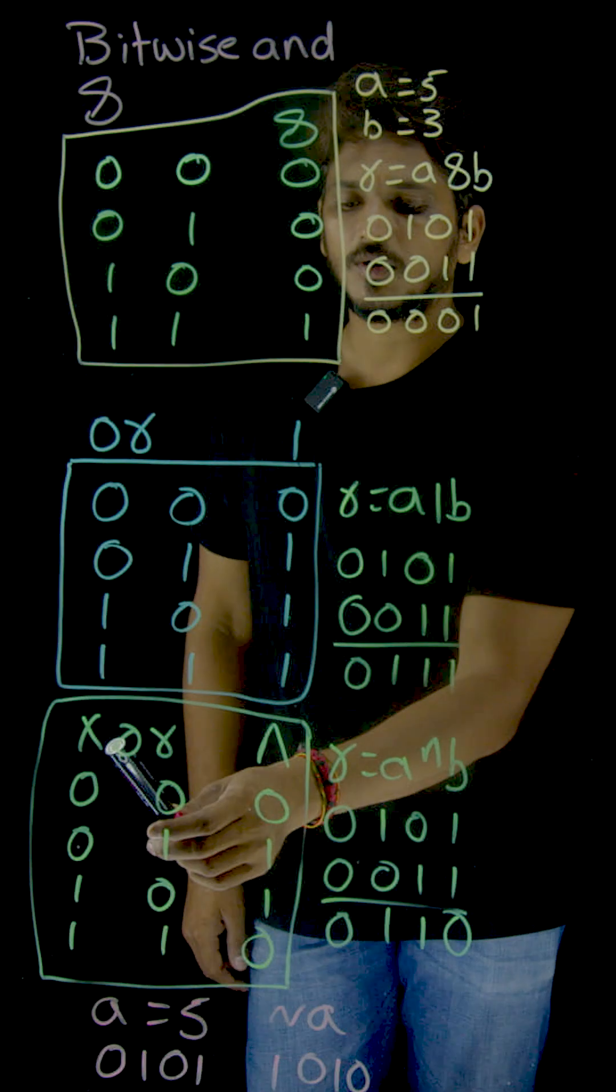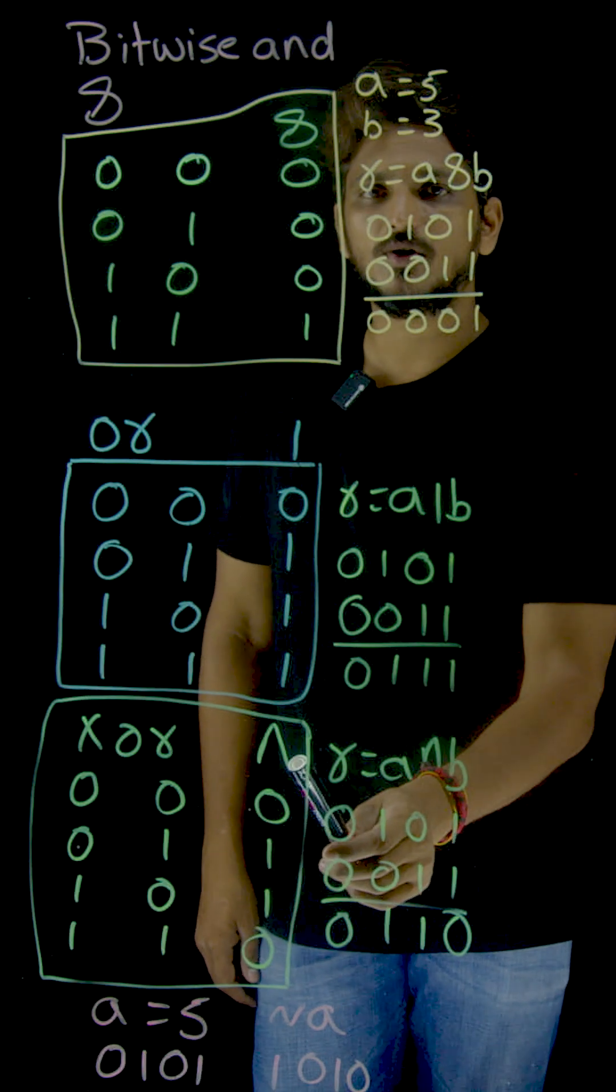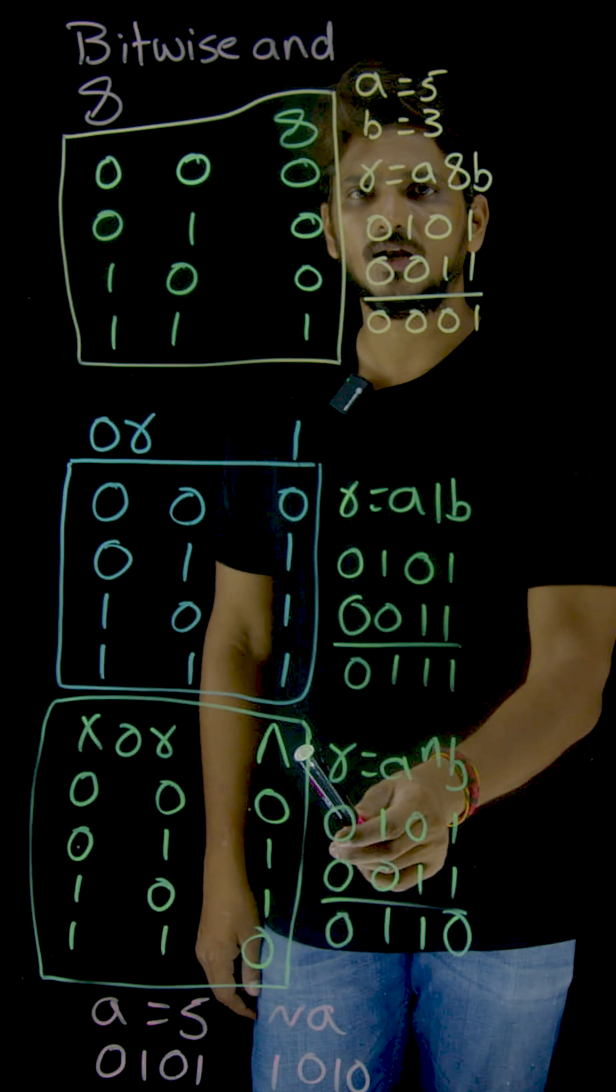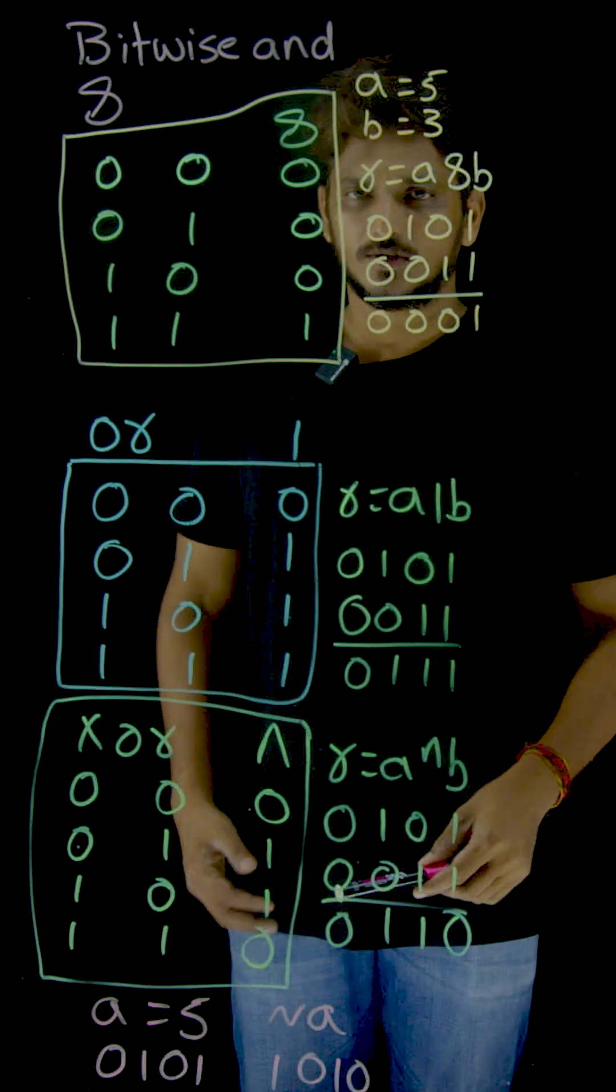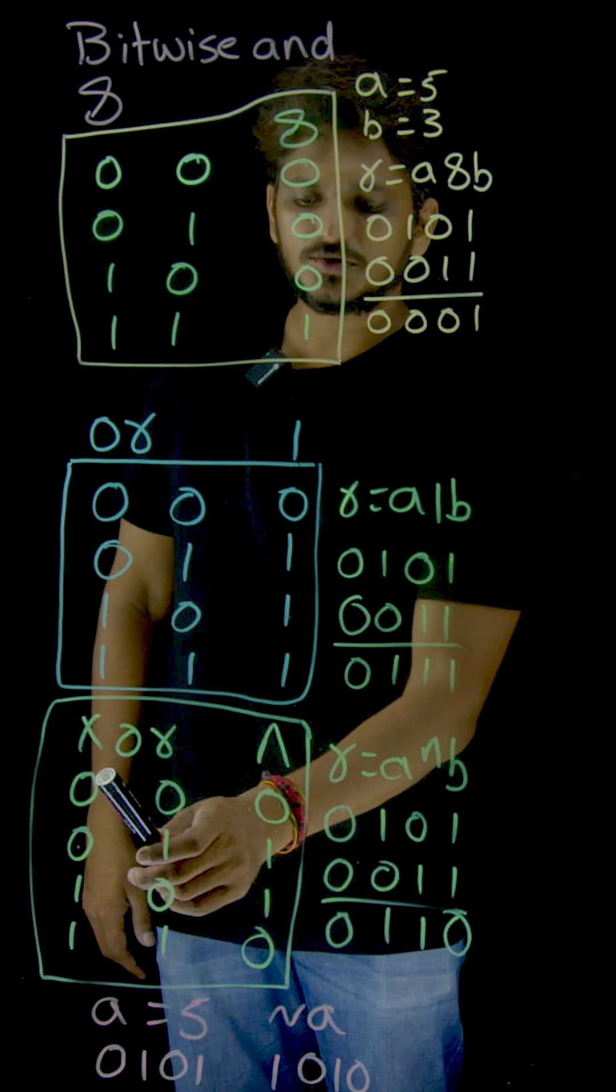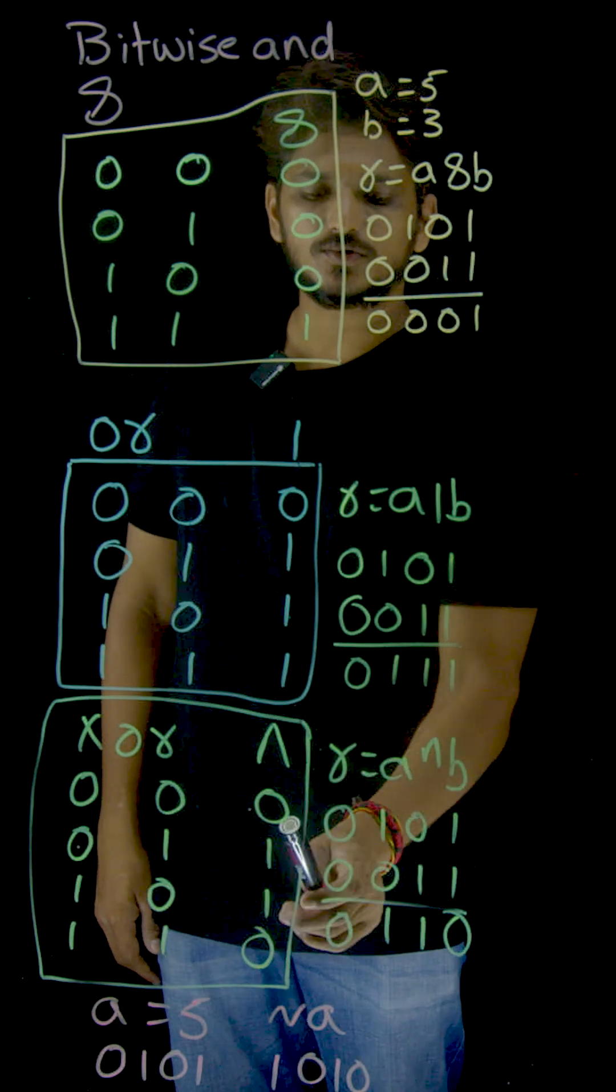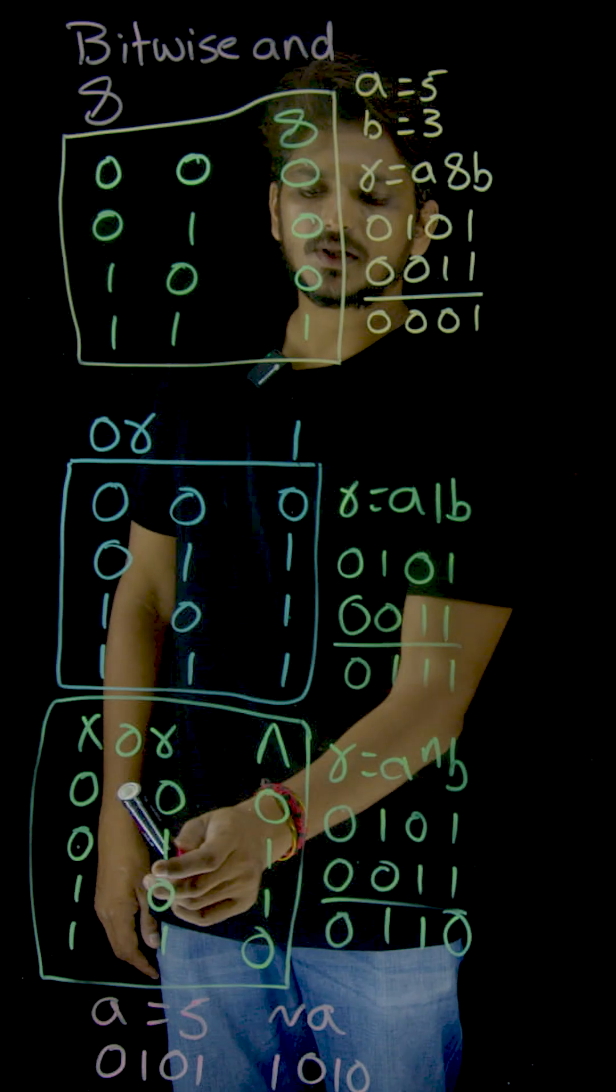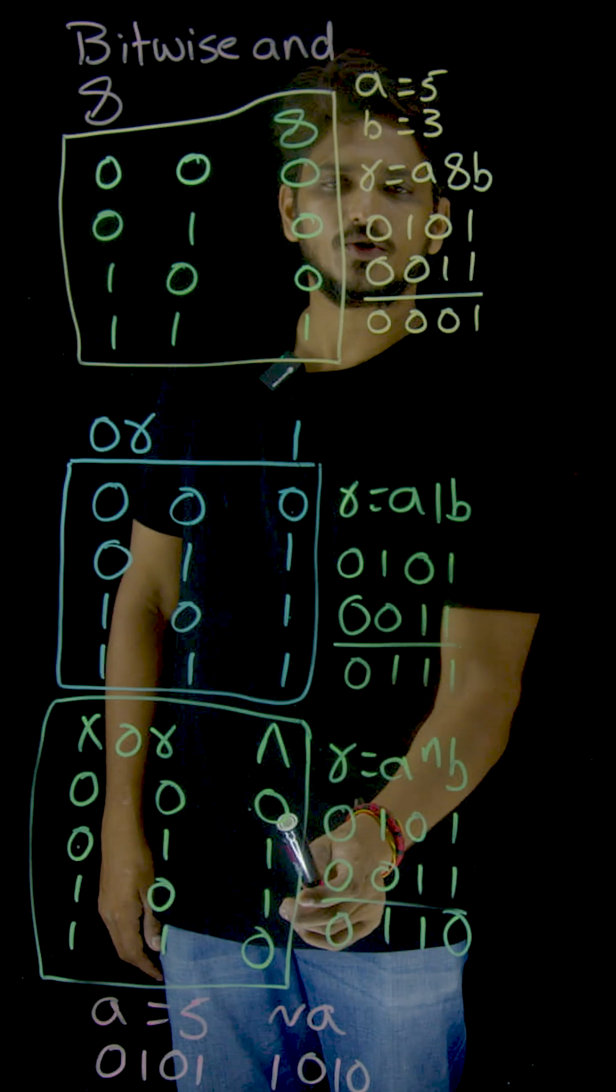Now coming to the XOR operator. XOR, the caret symbol, you are going to use for XOR operation in a bitwise XOR operation. So understand the truth table. 0 XOR 0 equals 0. If both the symbols are same, XOR is going to provide you 0.